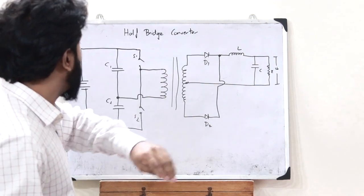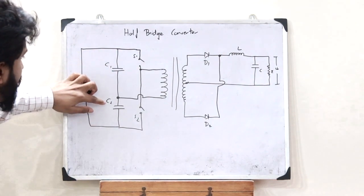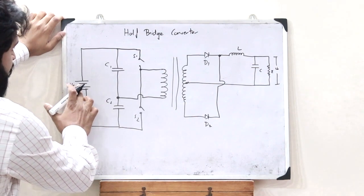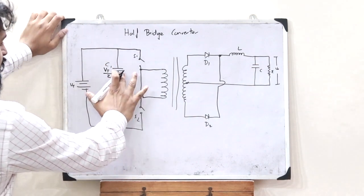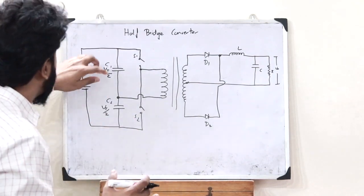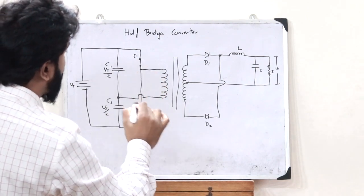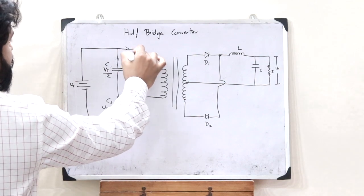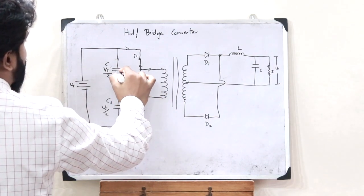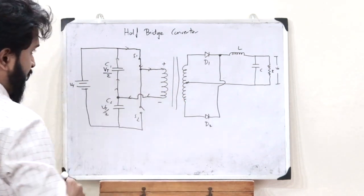Now let us see the working of a half bridge converter. The voltage source Vs is directly connected to capacitors C1 and C2 irrespective of the state of the switches. So if the supply is Vs, a voltage of Vs/2 will be present across C1 and another Vs/2 across C2. In the first case, switch S1 is turned on and S2 is turned off. When S1 is turned on, capacitor C1 starts discharging, current flows through the primary inductor, completing the circuit.